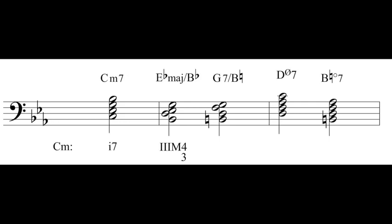For the G7 dominant seventh chord, G is scale degree 5 in C minor — C is 1, D is 2, E-flat is 3, F is 4, G is 5. So it's some kind of V. It's a major-minor seventh chord, so capital V, and dominant sevenths don't need an M — just the numeral. B-natural is in the bass, and B-natural is the third of the G7 chord, so with the third in the bass we use bass position symbol 6-5. The full label is capital V 6-5.